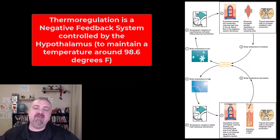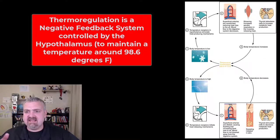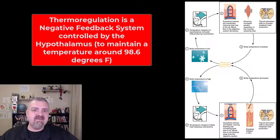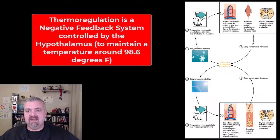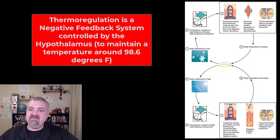Hey everybody, Dr. O here. Let's talk about thermoregulation. As you can see, this is an example of negative feedback because our body has a set point that it wants to maintain — 36.5 to 37.5 degrees Celsius, or about 97.7 to 99.5 degrees Fahrenheit. If there's a change, our body wants to restore homeostasis to bring us back to normal, and that's why it's an example of negative feedback.